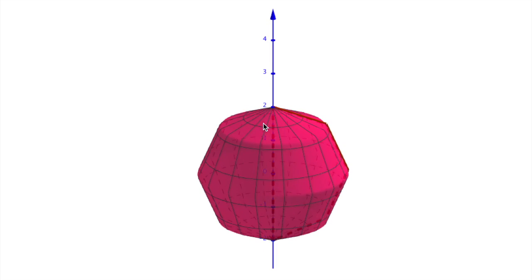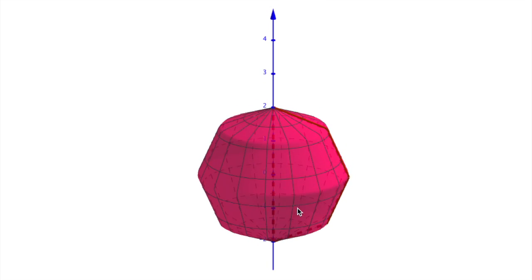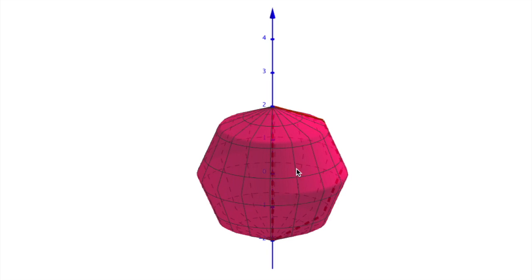The cool thing about polysphericons is that they are also rollable surfaces. If we look at the surface of revolution of an octagon, we see that it has four components, two peaks and two middle belts.